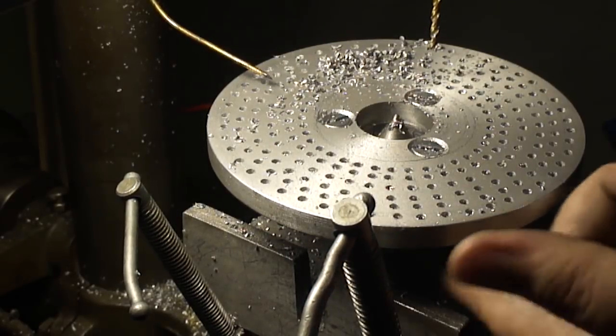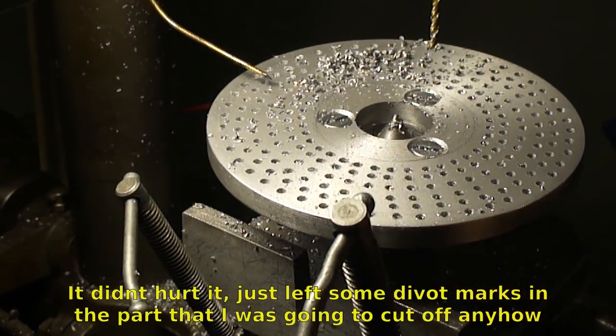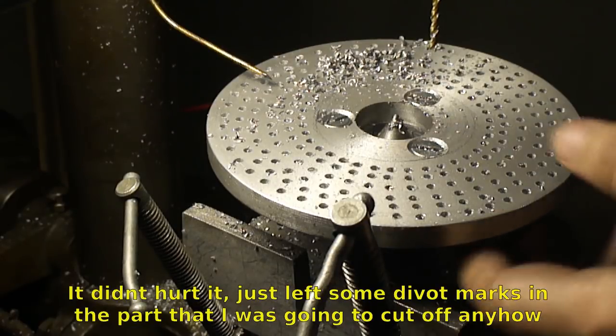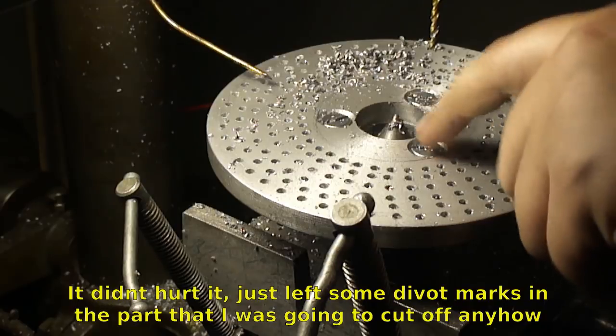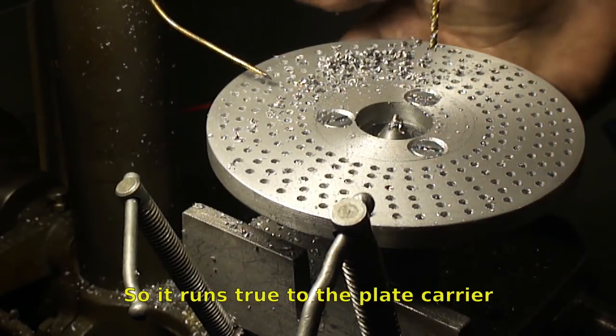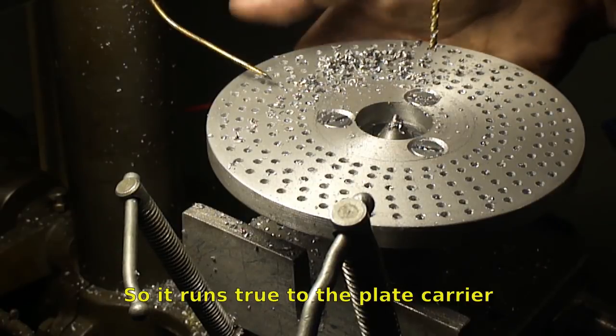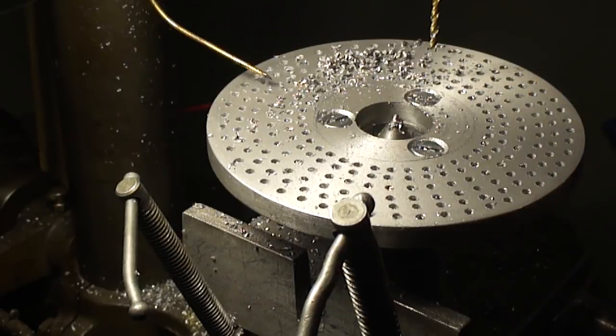I'm machining right on the clamp because I can make another one real easy. It was a piece of cake part to make, and I want it running true to the bolt hole. And I'm not going down into the clamp very much, so it should be good to go still. So, I'll take this off and see how it looks.